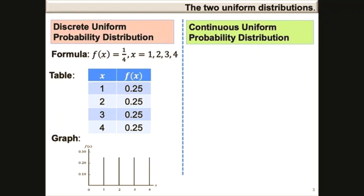Let's consider the discrete uniform probability distribution versus the continuous uniform probability distribution. In the case of the discrete uniform, the probability mass function f in this example is a constant value of 1 over 4, and the x values that can be observed are 1, 2, 3, and 4. We are able to assign a probability to each value using f of x, which in this case is 0.25. It's possible to sketch a graph that indicates the probabilities, which are only allocated to the values 1, 2, 3, and 4.